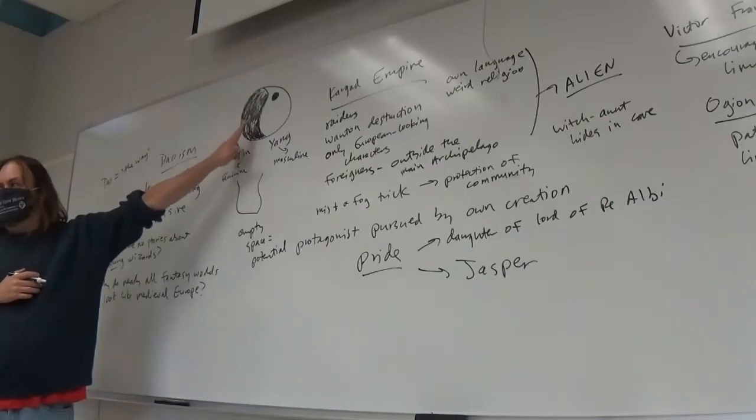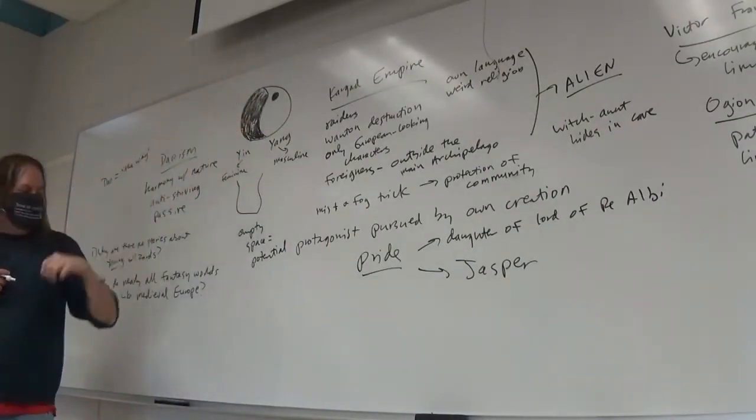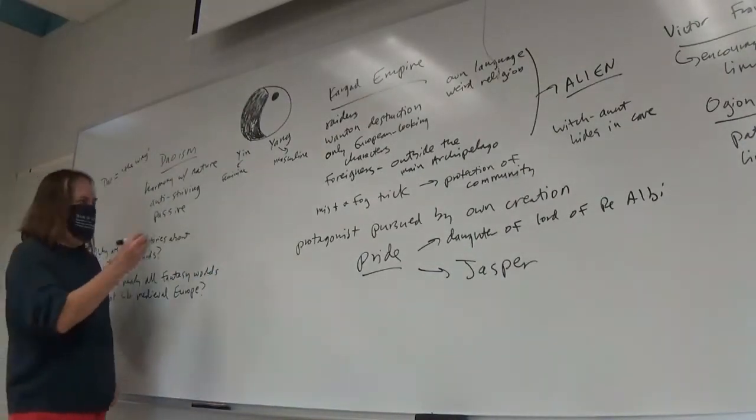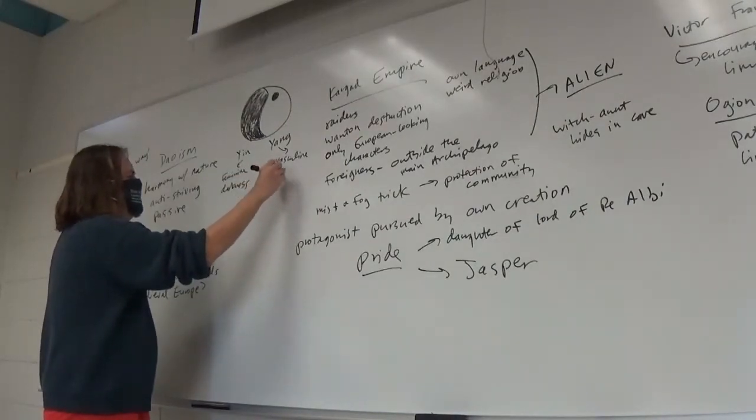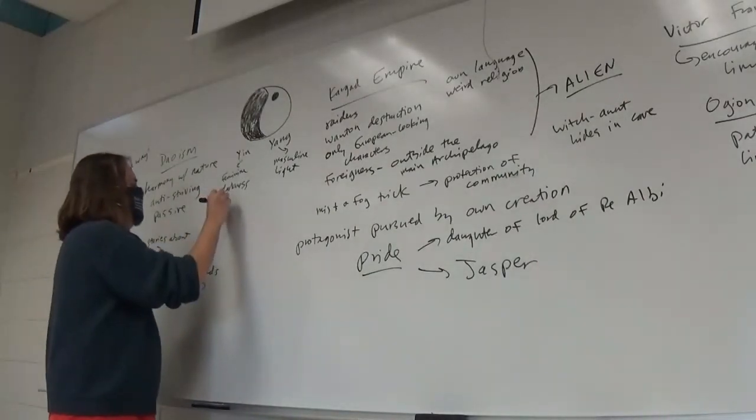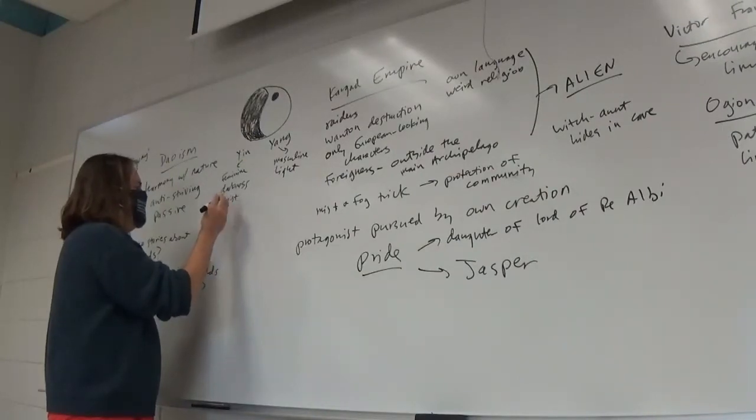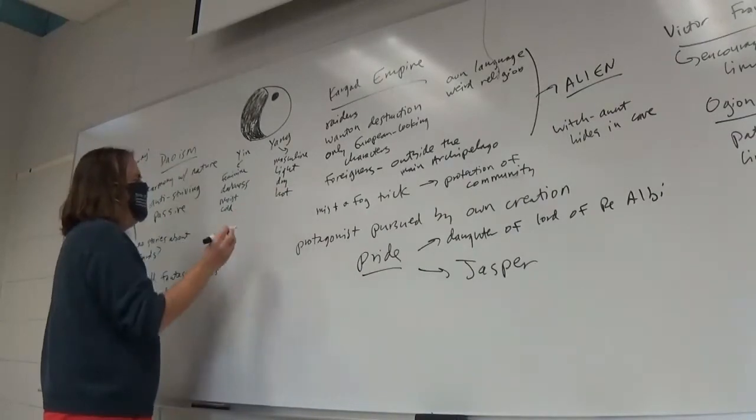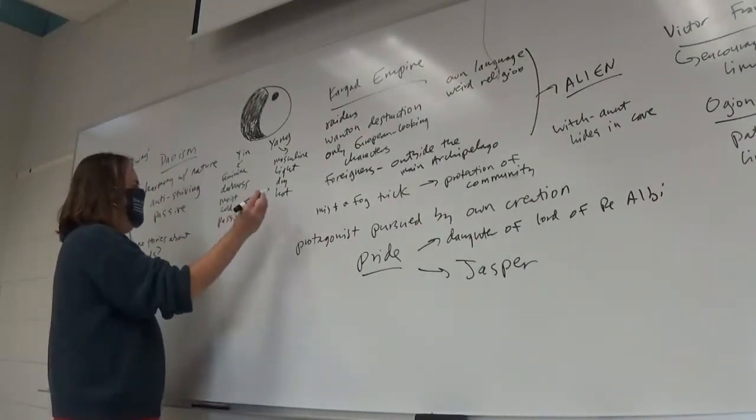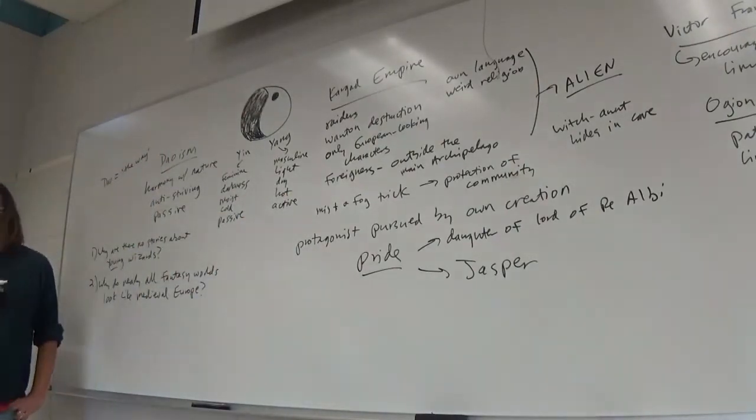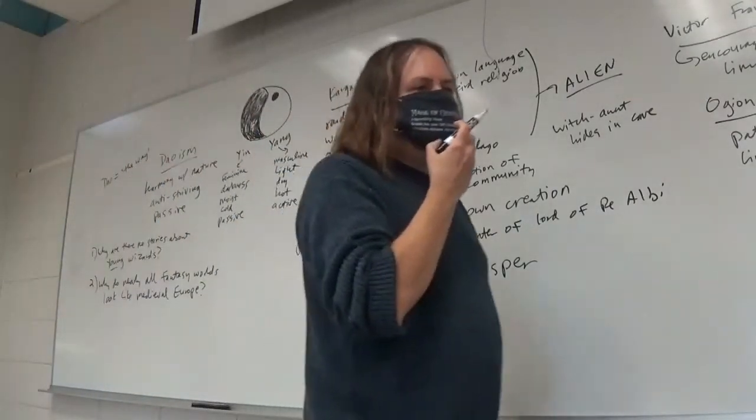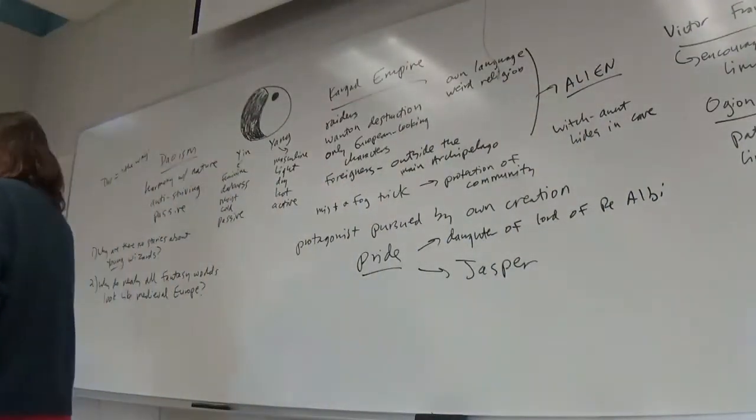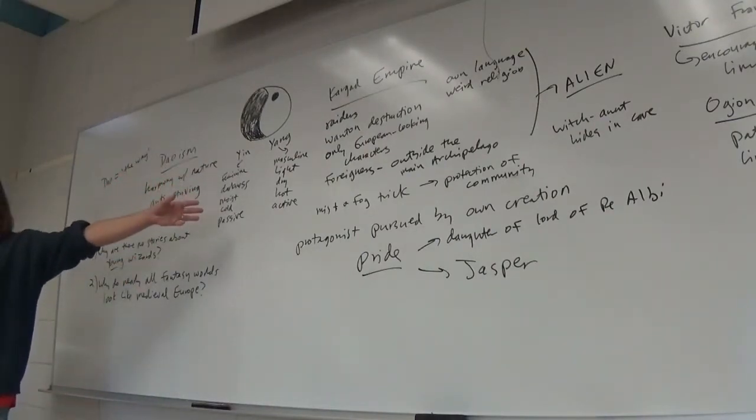And does anyone know what yin and yang mean? Like, yin is the feminine and yang is the masculine. Okay. And you have to have a little, each has to have a little of the other in order to be balanced. Right. Hence the small white circle in the black yin side, right? And the small black circle in the white yang side, right? And the yin, it's considered, like, it's the moon, it's the shadow, and the yin is the sun and the light. Yep. Yin is associated with darkness. Yang with light. Yin is associated with the moisture, the wet, and with the cold. Yang is associated with dryness, with heat. Yin is passive. Yang is active.